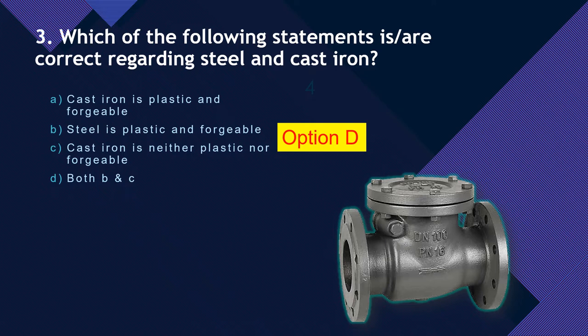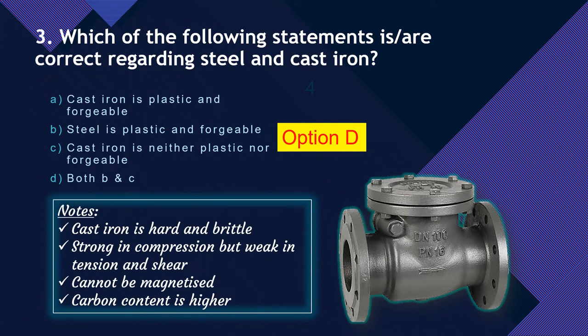Cast iron is very brittle in nature — it cannot deform in a plastic manner and it cannot be forged. Cast iron is hard and brittle, strong in compression but weak in tension and shear, and cannot be magnetized. Steel can be magnetized. The higher carbon content in cast iron makes it hard and brittle. Steel has lower carbon content, which is why it is plastic and forgeable.